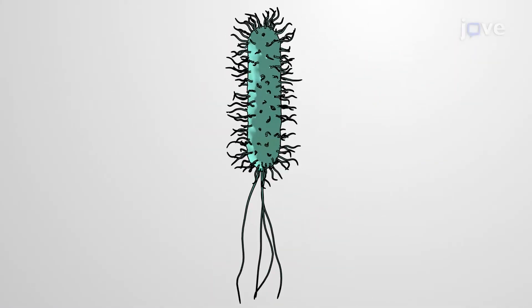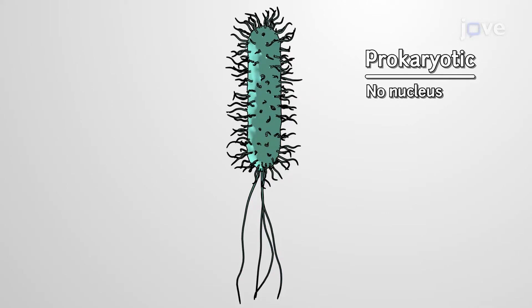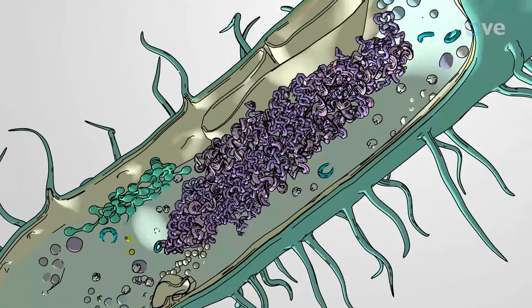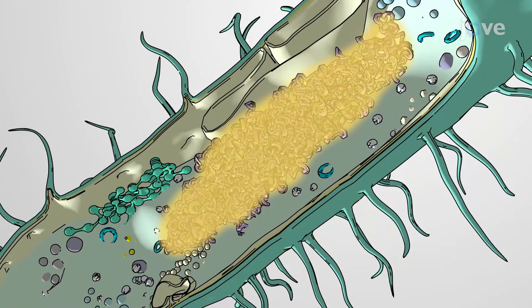Prokaryotes are relatively simple single-celled organisms that lack a nucleus, and with few exceptions, their internal components are not membrane-bound. For instance, DNA is freely bundled in the center in a nucleoid.